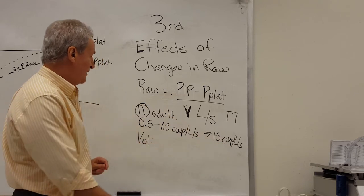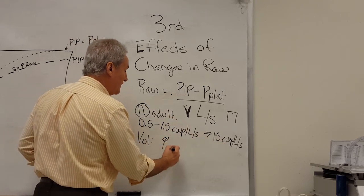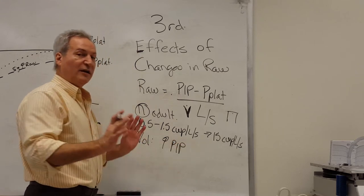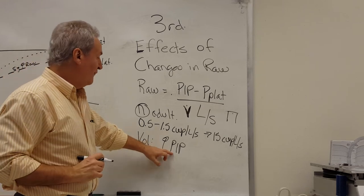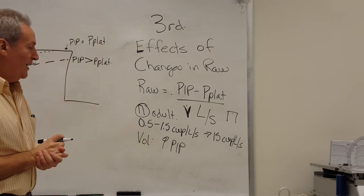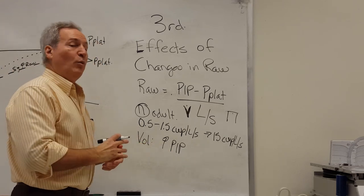So here, that's a very significant rise in RAW. What's going to happen? We're going to get a significant rise in PIP. There's not going to be any change in plateau at all. That's determined by compliance. But we have a major change in our peak inspiratory pressure.